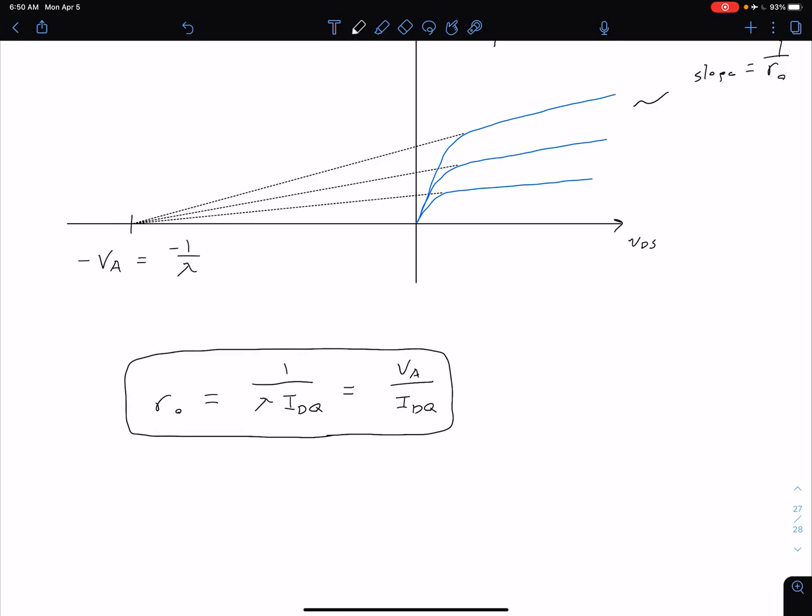Again, this is going to be an important small signal parameter when we do our AC analysis of the MOSFET. It's the output resistance of our transistor, small signal output resistance.